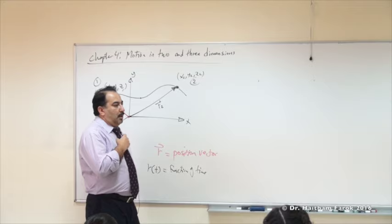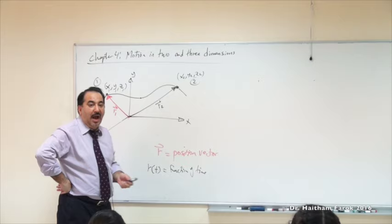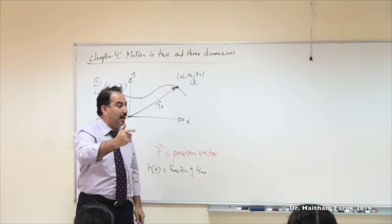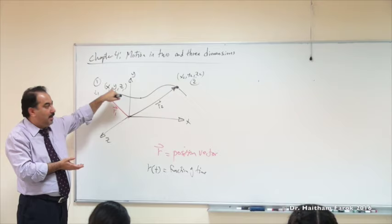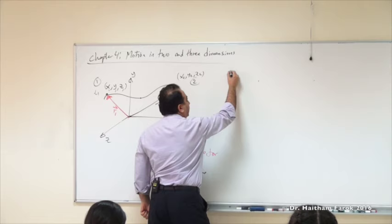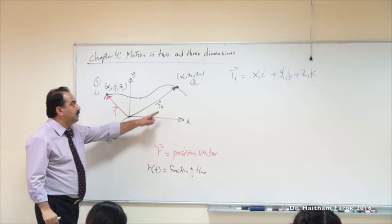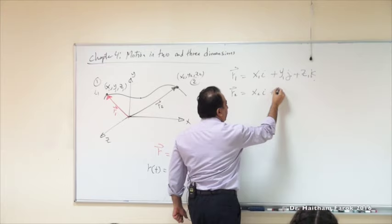Now let's write R. Any vector has three components. The components of R1 are R_X, R_Y, R_Z. But R_X means X, so: R1 vector equals X1·I + Y1·J + Z1·K. What about R2, the second position? X2·I + Y2·J + Z2·K.